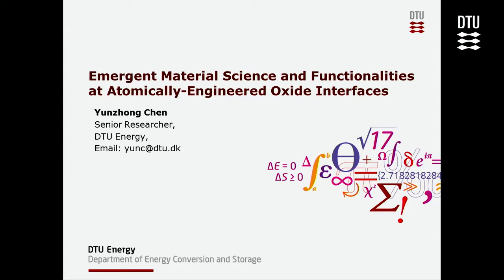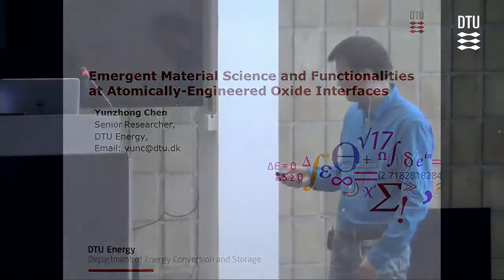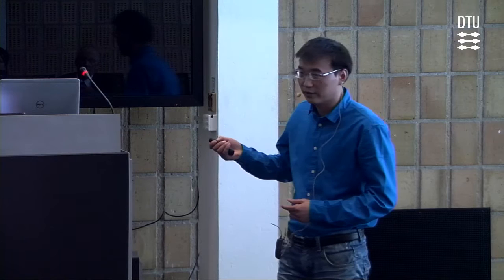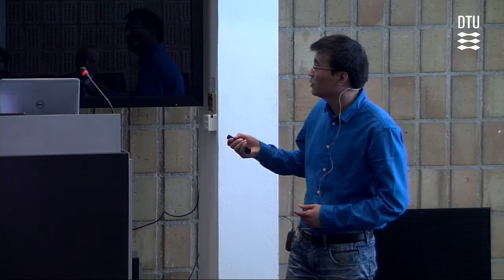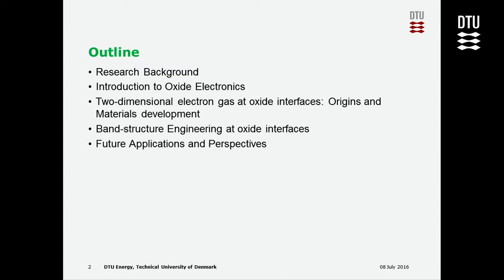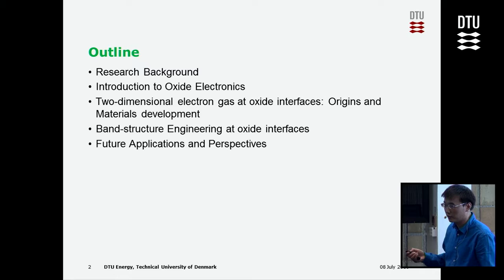An interface is a contact. When we put two metals together we get a contact — that's an interface. What I'm talking about today is when you put two ceramics together, you get an interface which will behave like a metal, which can be very useful in electronic devices.